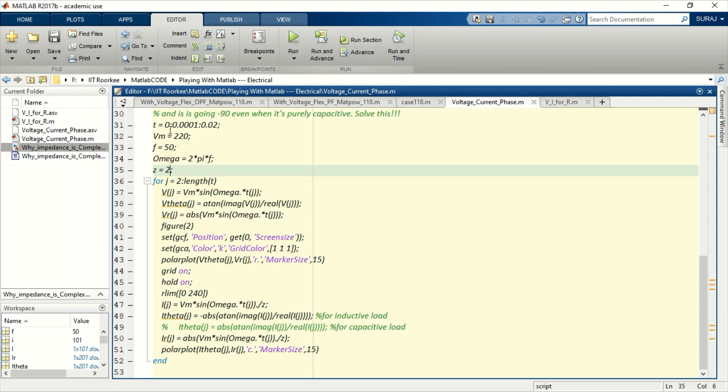This is a simple code that I have created. Here I have taken Z equals 2, which means only resistance. There is no inductance for now.